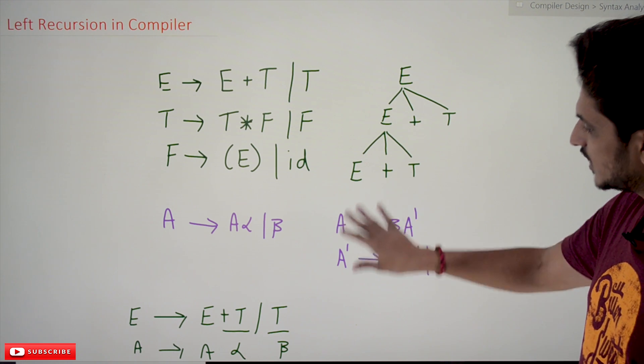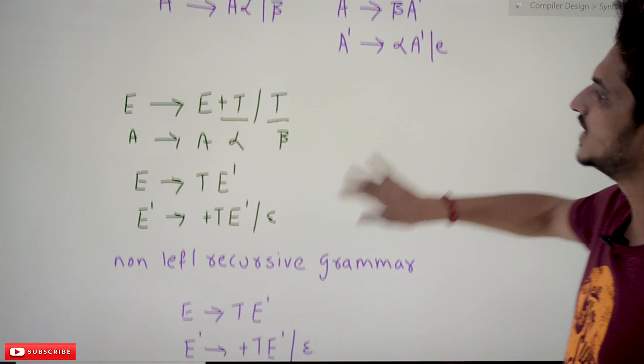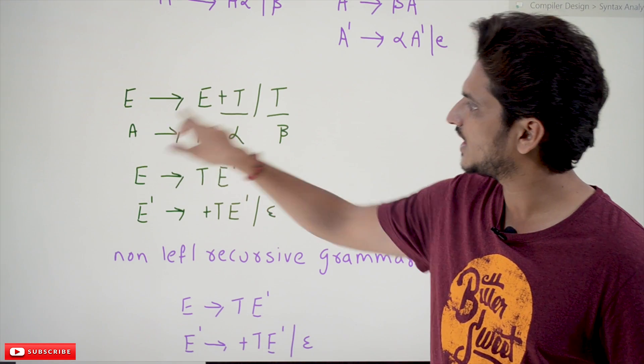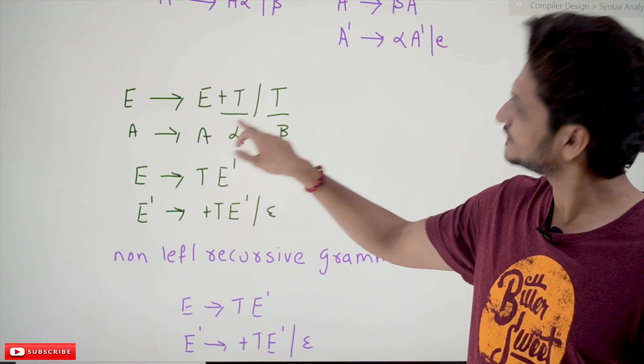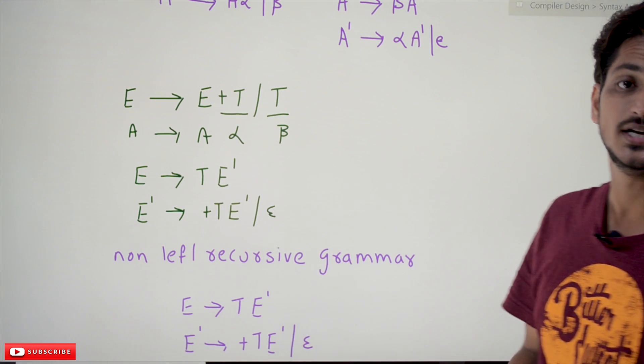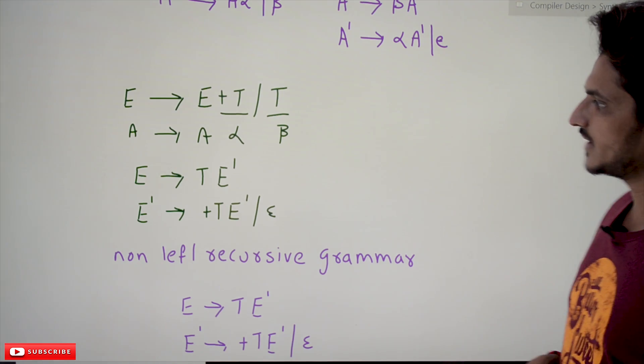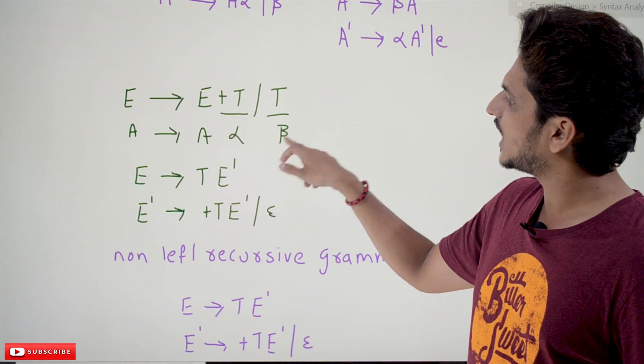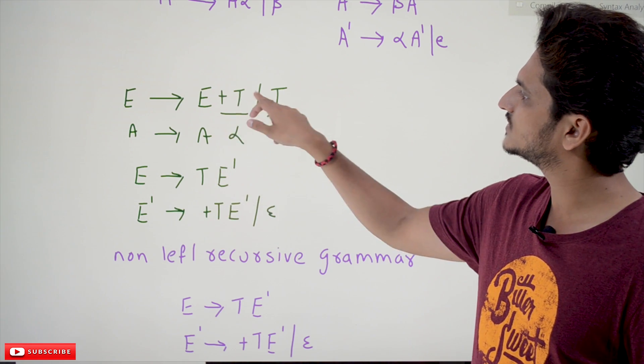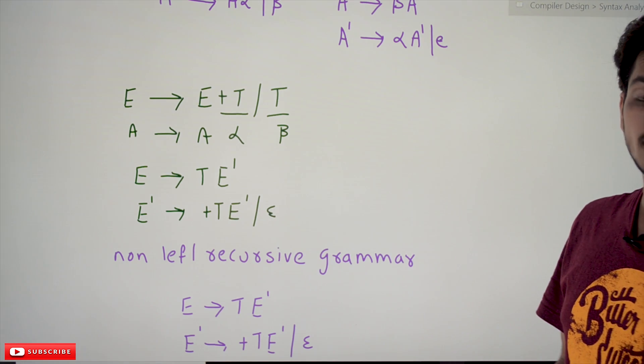We apply this equation to our grammar: E tends to E plus T or T. This E is considered as A, this E plus T is considered as A alpha, this T is considered as beta. It is of the form A tends to A alpha or beta. So we can write the equation in this form: E tends to beta E dash. Beta means here T, T E dash. E dash tends to plus T E dash or epsilon. Like that, we have to convert our grammar without having left recursion.